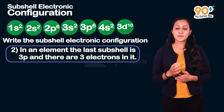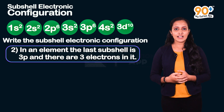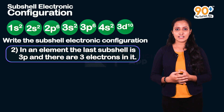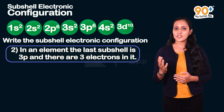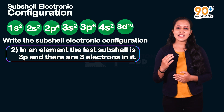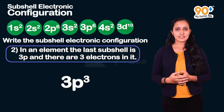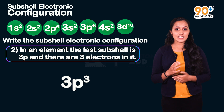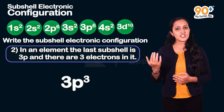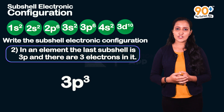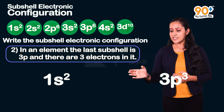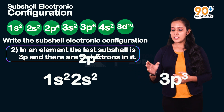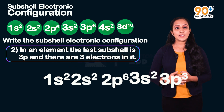Second question: In an element, the last subshell is 3p and there are 3 electrons in it. So the complete subshell electronic configuration is: 1s², 2s², 2p⁶, 3s², 3p³.